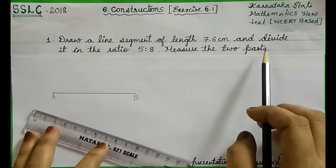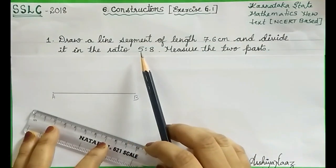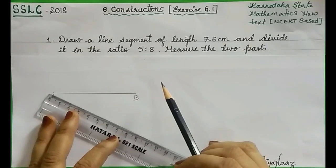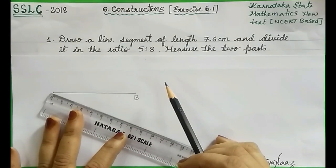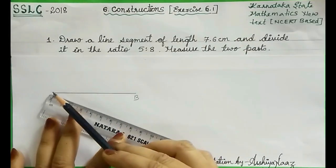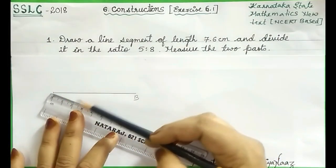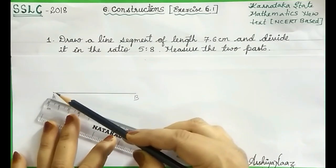Then we have to divide this line in the ratio 5 is to 8. For this, draw another ray, another line from point A which is making an acute angle with line AB.